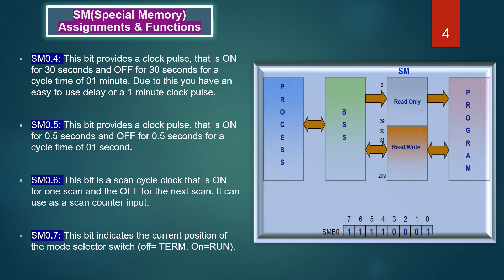SM 0.7: this bit indicates the current position of the mode selector switch — off equals term, on equals run. This bit can be used to enable freely programmable communication when the switch is in run, and you can enable normal communication with the programming device by setting the switch to term.